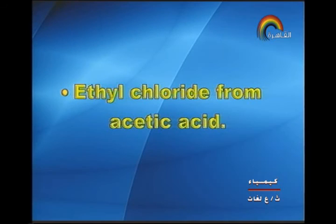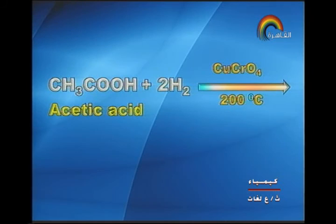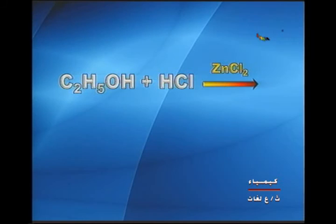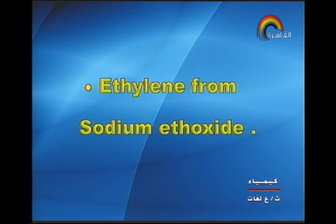Next point: ethyl chloride from acetic acid. Acetic acid on reduction by copper chromate at 200°C gives ethanol and water. Then ethanol reacts with hydrogen chloride gas in the presence of zinc chloride giving ethyl chloride and water.